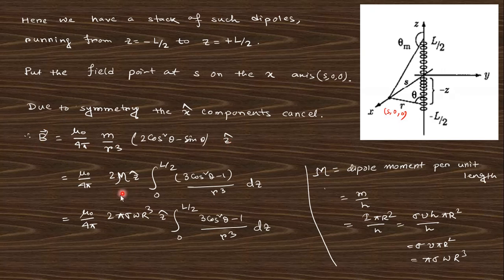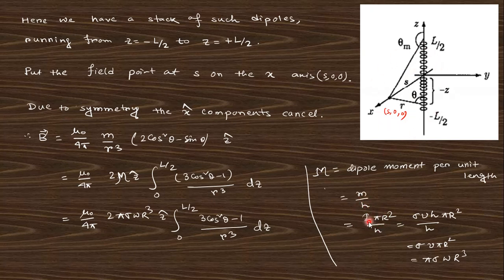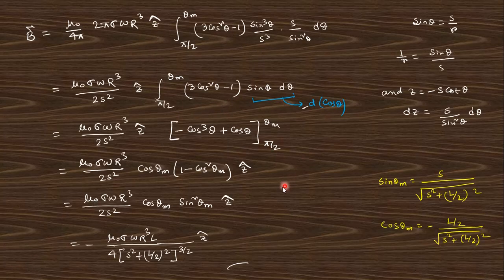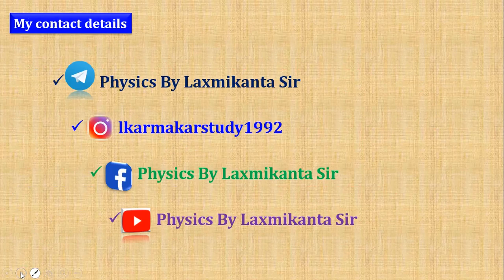So B = (μ₀/4π) times the integral, where M is the dipole moment per unit length, integrated from −L/2 to +L/2. Due to the even function symmetry, integrating from 0 to L/2 and doubling gives the result. The dipole moment per unit length: if total length is h, then the dipole moment is I × area, and I = σvh = σωRh. Substituting this value and integrating gives the final expression involving sin θ_m and cos θ_m.